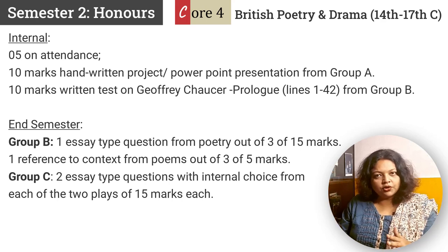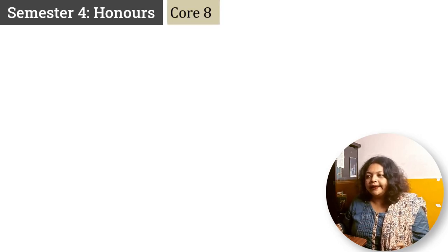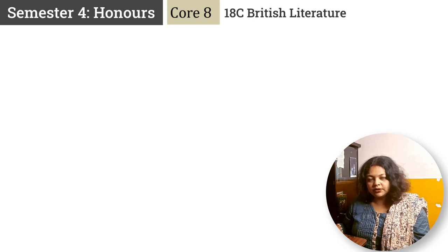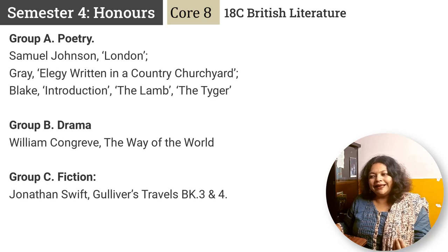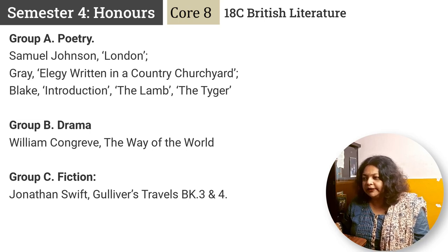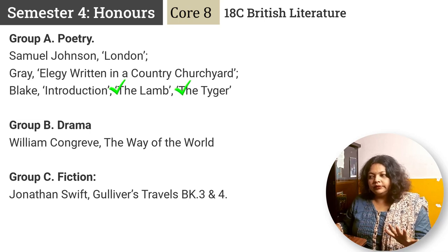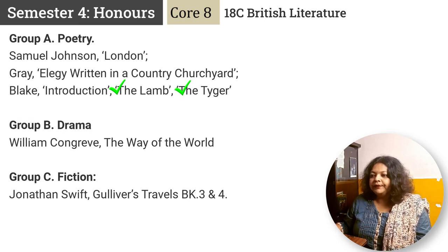Now let's move to semester 4 English Honours. Just like semester 3, you have three core papers. Core 8 is essentially 18th century British literature with three groups. Group A poetry includes Samuel Johnson's London, Gray's Elegy Written in a Country Churchyard, and Blake's Introduction, The Lamb, and The Tiger. Group B drama has William Congreve's The Way of the World. Group C has Jonathan Swift's Gulliver's Travels, Books 3 and 4.